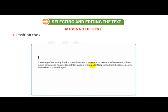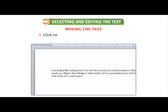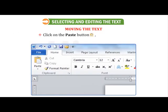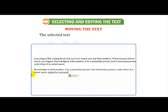Position the cursor at the location where you want to place the selected text. Click on the Paste button or press Ctrl+V. The selected text appears at the desired location.